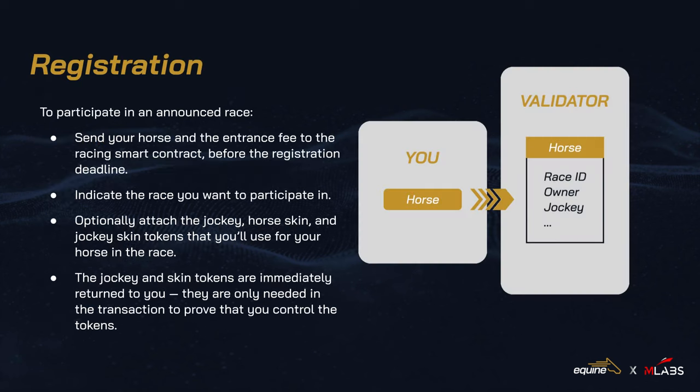Once a race has been announced, you can participate by sending your horse and entrance fee to the racing smart contract, indicating the race you want to register for. You can optionally choose which of your jockeys, horse skins, and jockey skins to apply to your horse during the race.